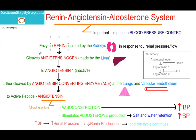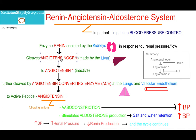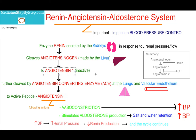Renin acts on angiotensinogen, which is made by the liver. It acts on angiotensinogen to make angiotensin-1. Angiotensin-1 is an inactive decapeptide.